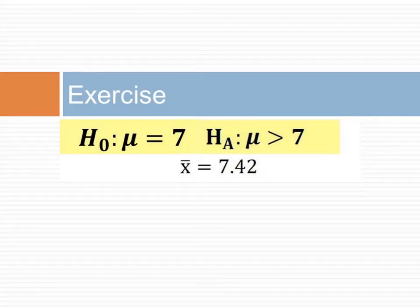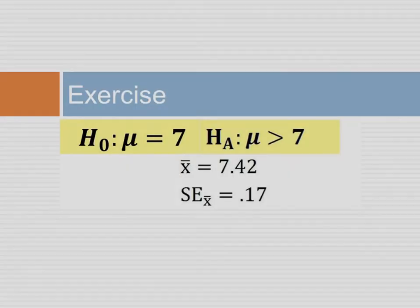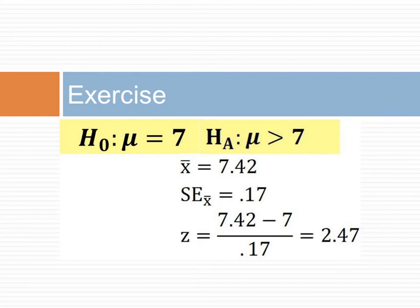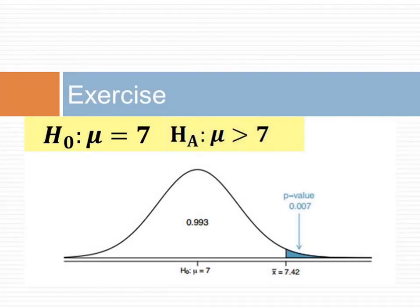Next, we calculate the z-value. The mean of the sample was 7.42. The standard error was 0.17. The z-value associated with this mean, the standard error, and the null hypothesis is 2.47. We compute the p-value by finding the area below the z-value in the standard normal distribution. In this case, we look for the area below a z-value of 2.47. The area below this z-value is 0.993. The p-value is 1 minus this area, which is 0.007. This is the probability of a type 1 error — the probability of rejecting the null hypothesis when it is true.